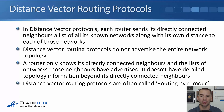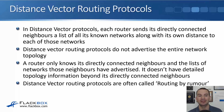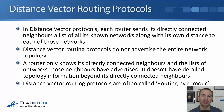In distance vector protocols, each router sends its directly connected neighbors a list of all its known networks along with its own distance to each of those networks. Distance vector routing protocols do not advertise the entire network topology. A router only knows its directly connected neighbors and the lists of networks those neighbors have advertised — it doesn't have detailed topology information beyond those directly connected neighbors. Because of this, distance vector routing protocols are often called routing by rumor.